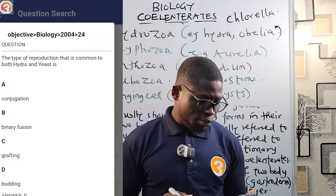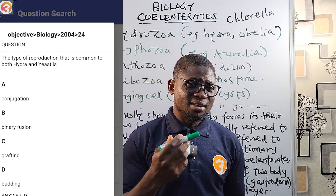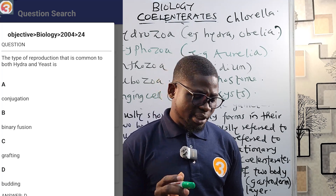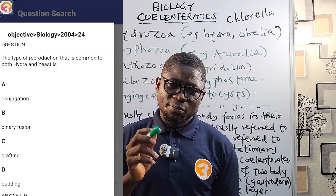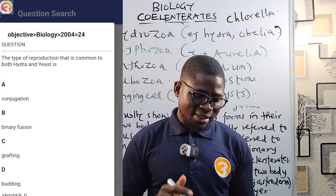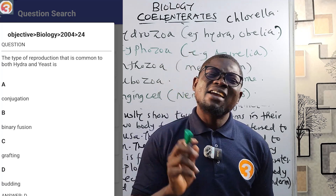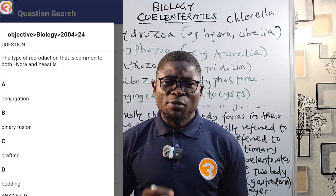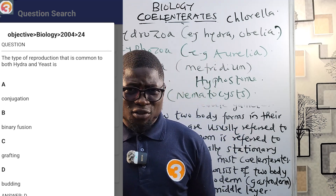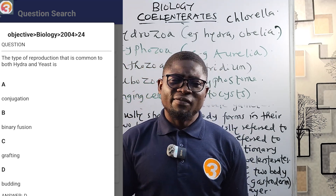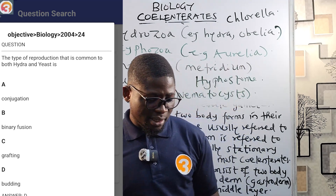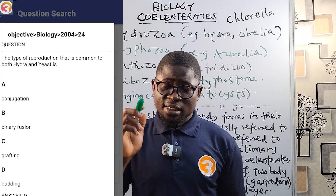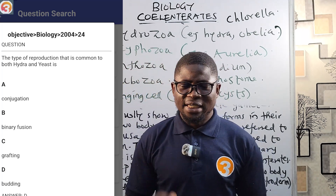From 2004, question number 24: 'The type of reproduction that is common to both hydra and yeast.' Both hydra and yeast reproduce asexually by budding. This shows why all knowledge gained is not wasted — the question involves both hydra and yeast. The options are: A) conjugation, B) binary fission, C) grafting, D) budding. The correct answer is budding.